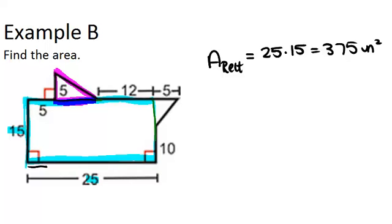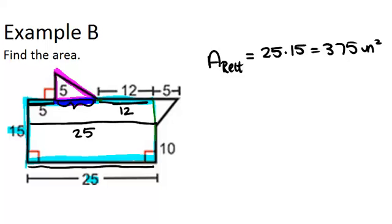Because we know that this base is 25, it means this full distance across is 25. We also know this part right here is 5, and this part right here is 12. So that means whatever is right here must be the missing piece in order to add up to 25. So basically you want to do 25 minus 12 minus 5 to figure out what's missing, and you get 8.